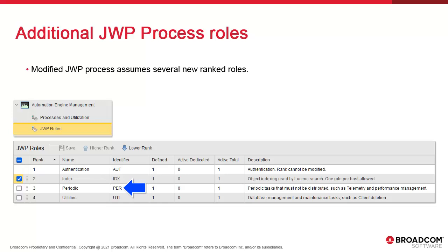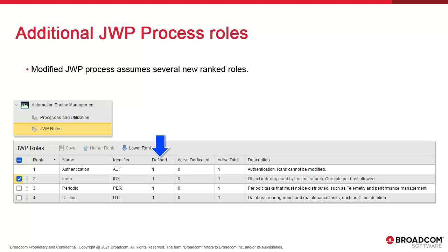The PER role for period handles SLAs, telemetry, and performance management. UTL for utilities focuses specifically on deleting clients from the configuration. IDX is for indexing and Lucene search. Administrators can enable or disable a specific role for a JWP and rank them in order of priority — meaning one JWP can be dedicated to indexing while another handles cyclical task management. The system also tells you how many JWPs have assumed responsibilities for a particular role, and the table shows if JWPs are dedicated to specific roles and how many.